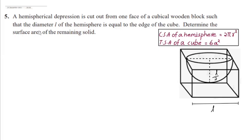Dear students, welcome to your maths guide. This is question number 5, exercise 13.1. A hemispherical depression is cut out from one face of a cubical wooden block such that the diameter L of the hemisphere is equal to the edge of the cube. Determine the surface area of the remaining solid.